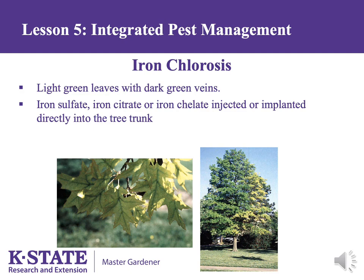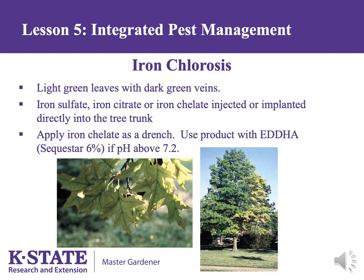Fortunately, the tree will throw out a new set of leaves that will be dark green. Another method is to use iron chelate applied as a drench — the iron chelate is mixed with water and poured under the drip line of the tree. However, most iron chelates do not work when soil pH is above 7.2, which is very common in Kansas. In such cases, an iron chelate that contains EDDHA is recommended, most commonly found under the trade name Sequestar 6%. The response is also rapid but will usually only last one year.